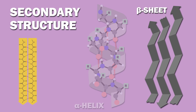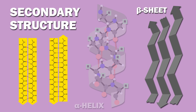Beta sheets can form parallel chains, which are made from neighboring chains running in the same direction, or anti-parallel chains, which are made from a polypeptide chain that folds back and forth on itself so that nearby sections run in opposite directions. While hydrogen bonds in an alpha helix are intrastrand, hydrogen bonds in beta sheets are interstrand.